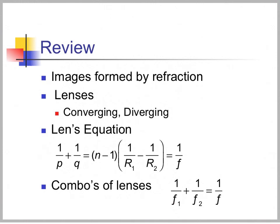To review what we talked about today: we looked at images formed by refraction, specifically different types of lenses — converging and diverging. We looked at the lens equation: 1 over P plus 1 over Q equals 1 over F. And we talked about combinations of lenses: 1 over F1 plus 1 over F2 equals 1 over F.